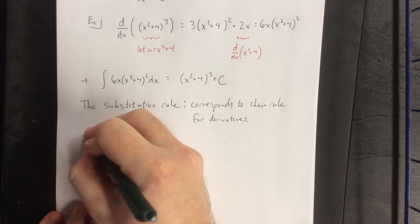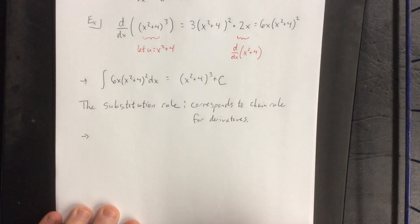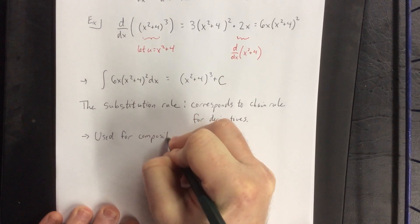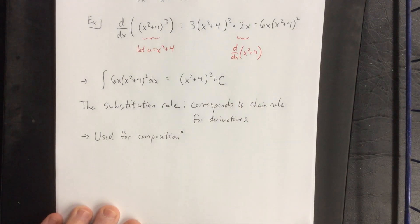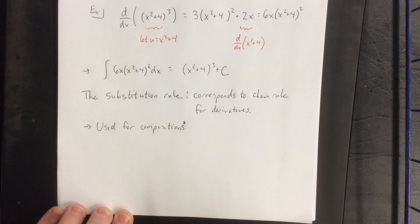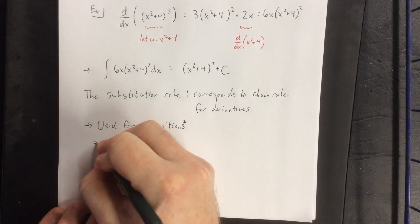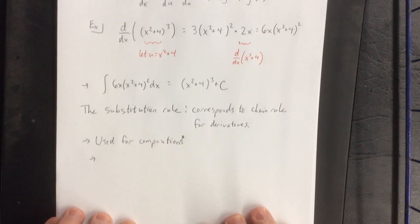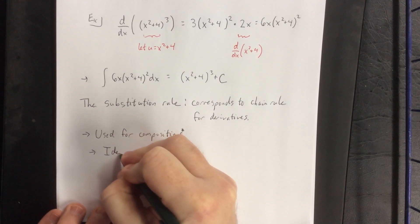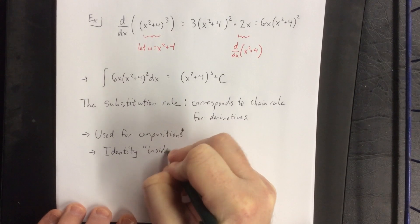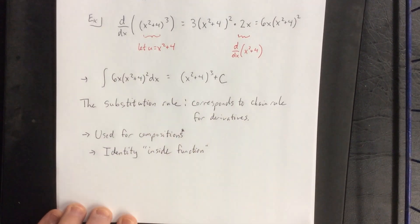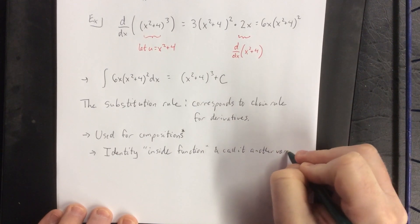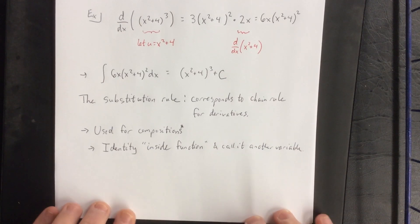Here's a general sketch of the way the substitution rule works. The way that we were able to properly identify that the chain rule would be necessary for a problem is when you see a composition — there are some exceptions to this rule, so we'll address that later. The way that you identify a composition of two functions is by identifying that you have an inside function as well as an outside function. Just like for the chain rule, one of your big goals is to identify the inside function and make a substitution on it — calling it another variable.